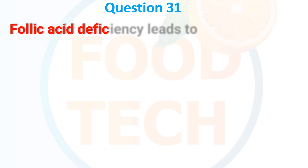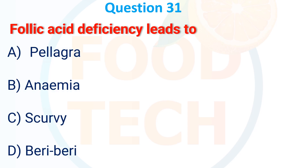Question 31. Folic acid deficiency leads to: A. Pellagra. B. Anemia. C. Scurvy. D. Beriberi. The correct answer is B: anemia.